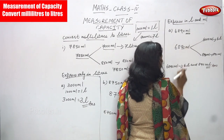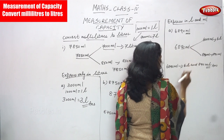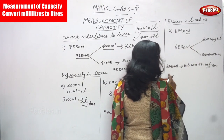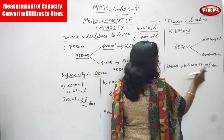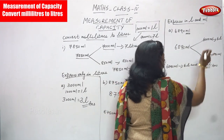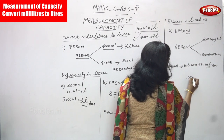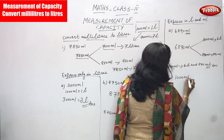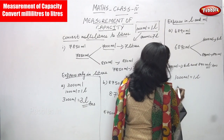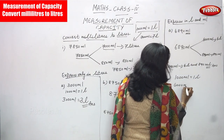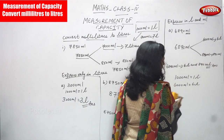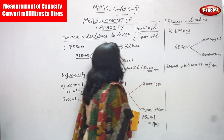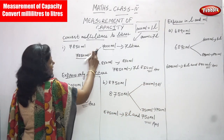The answer must be given in liters and milliliters. The formula is: 1000 ml equals 1 liter. So 6000 ml equals 6 liters. Therefore 6890 ml is converted into 6 liters and 890 milliliters.